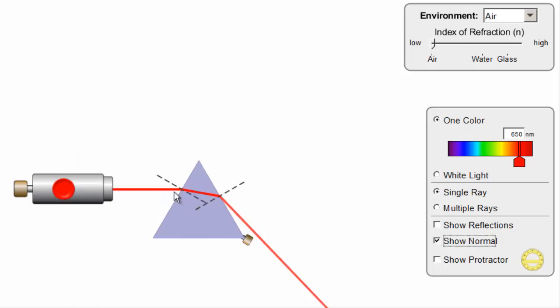I'm going to put the normals in here. You see we refract, bending in on this first surface, and when I come to the second surface I refract, bending out. So I get a double refraction.